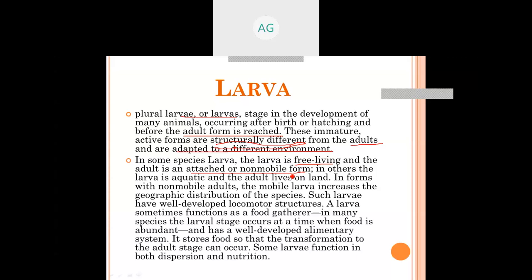In forms with non-mobile adults, the mobile larvae increase the geographic distribution of the species. If adults are non-mobile, their dispersion is restricted. But the larvae are mobile, so they can travel far away. Larvae have well-developed locomotor structures for this purpose.